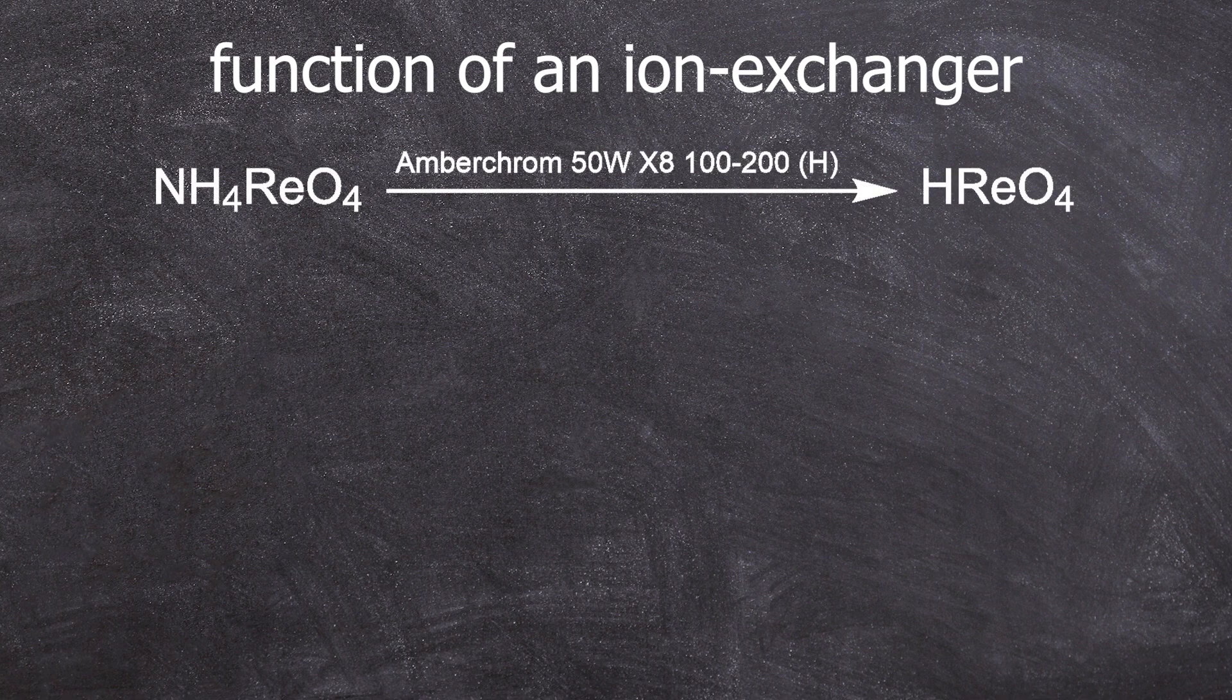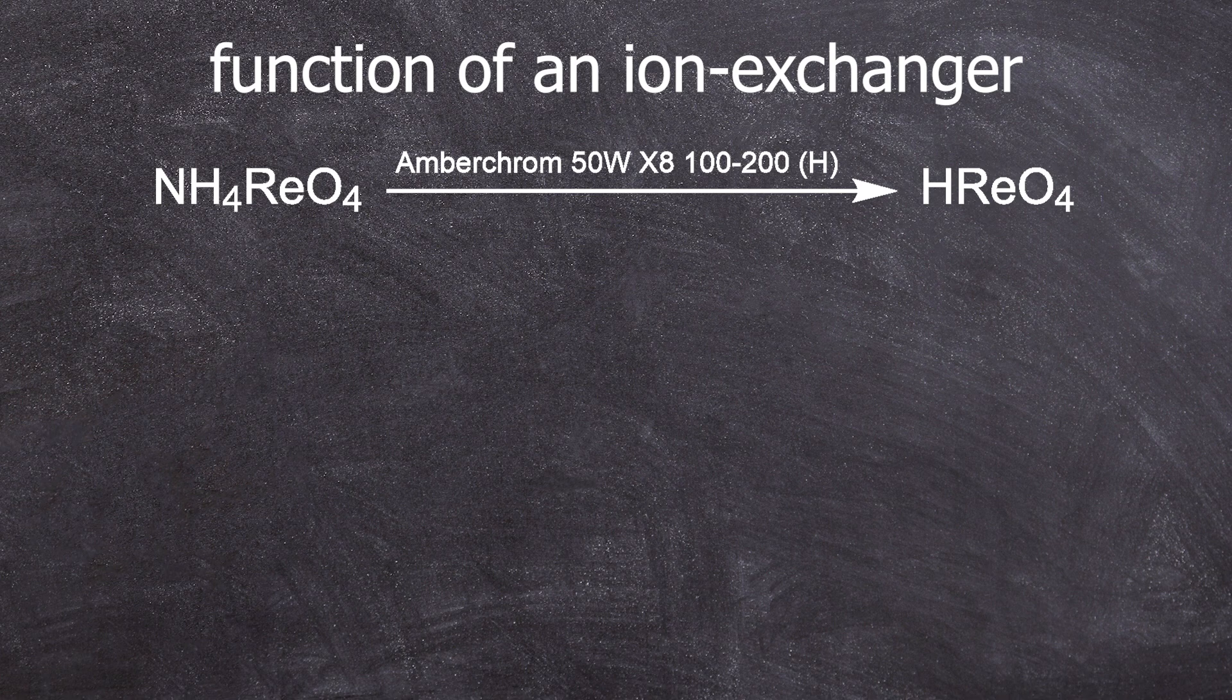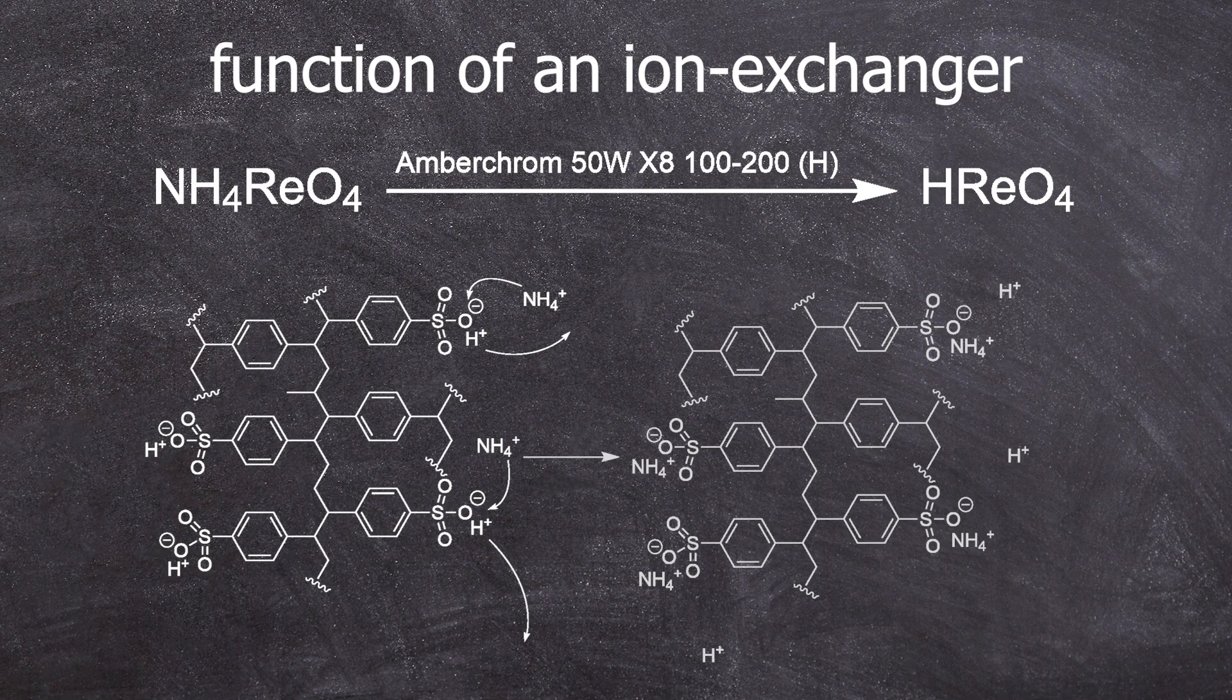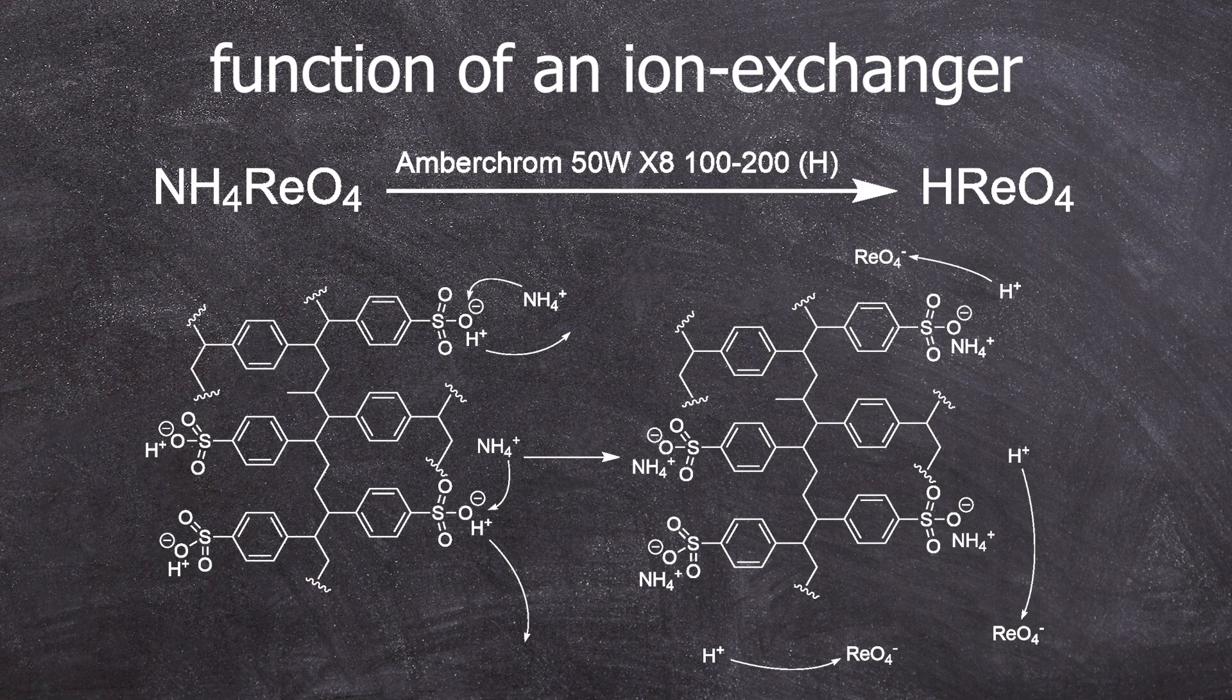We do this with a cation exchanger. It's some acid residue bound to a resin that binds a cation from a salt and replaces it with a proton in this case. So in the form of our ammonium perrhenate solution, the ammonium ion goes into the acid group of the resin and a proton is released into the solution and there the perrhenic acid can be formed while the ammonium ions are firmly bound to the ion exchanger.